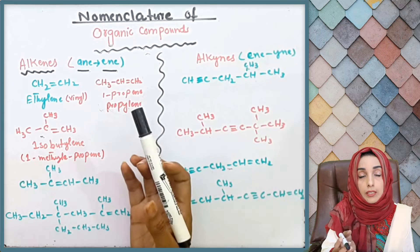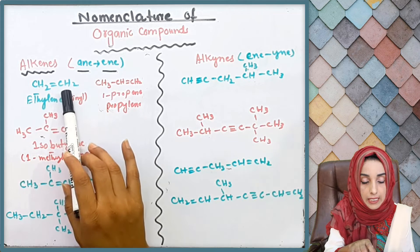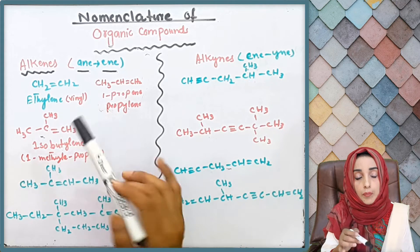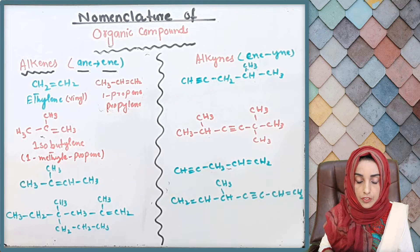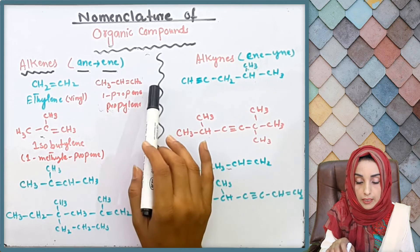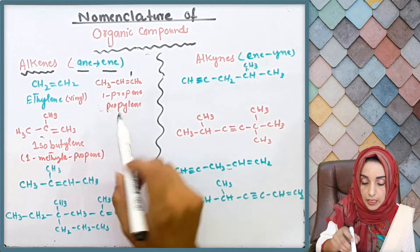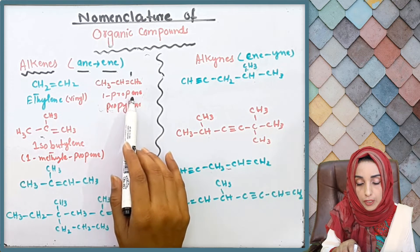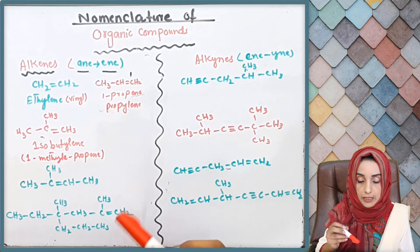These are some compounds that we normally encounter, and these are their common names. For example, ethylene — its common name is vinyl, which is more popular. There is also a compound which has a double bond; if all bonds were single, it would be propane, but since carbon number one has a double bond, we mention the position and write propene. It is also called propylene — that is its common name.